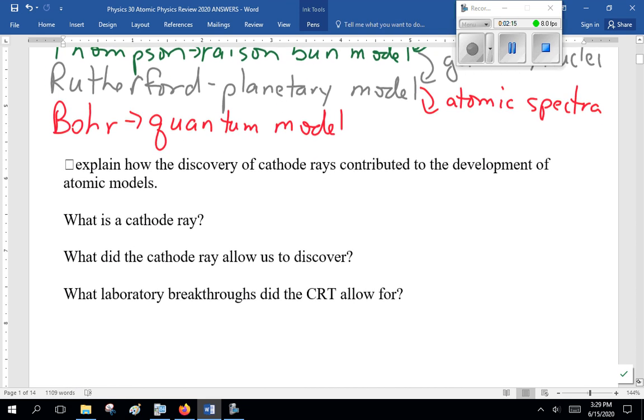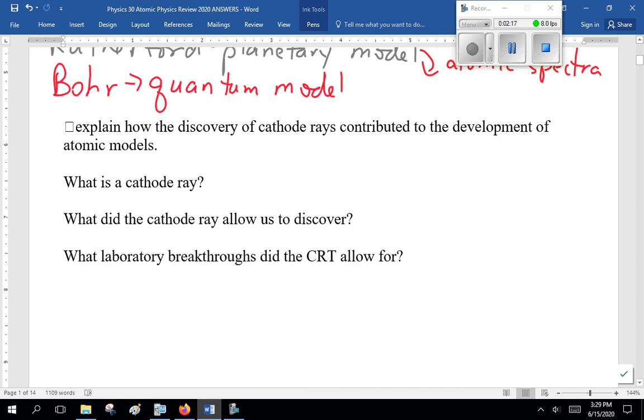Now, next bit. Explain how the discovery of cathode rays contributed to the development of atomic models. Well, cathode rays are electrons. What do they allow us to discover? Well, charge-to-mass ratio, and that atoms are divisible. We have subatomic particles.